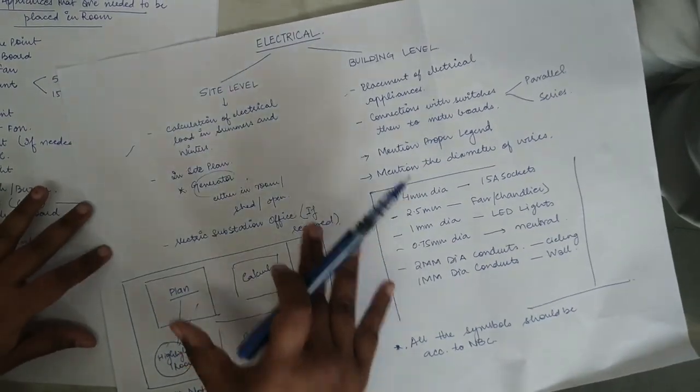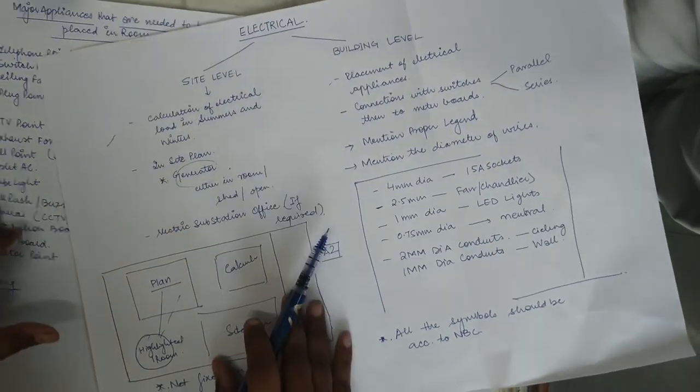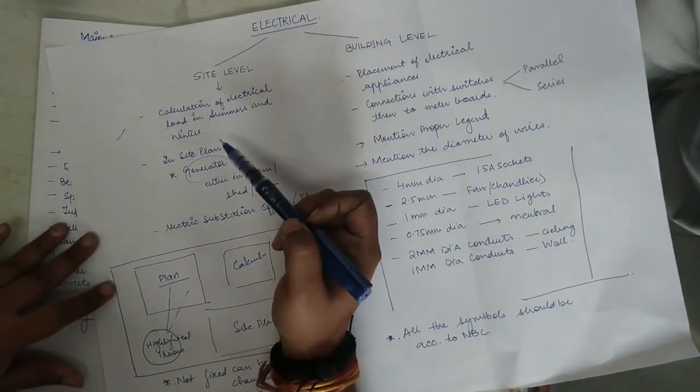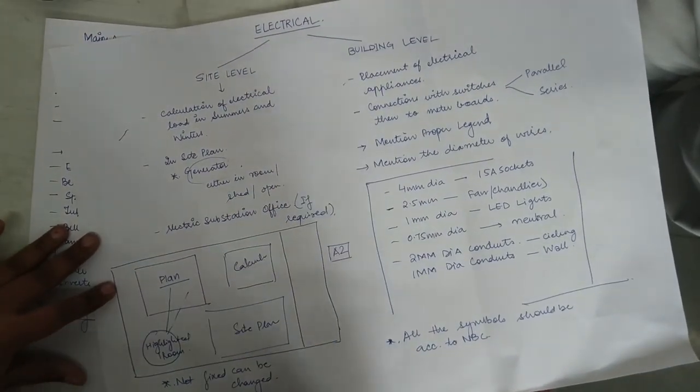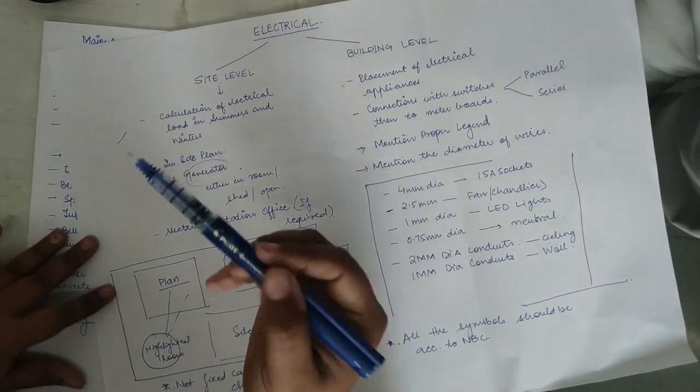Firstly, we will talk about the site level. At site level, two things are needed to be done. First of all, we need to have the calculations of electrical loads in summers or in winters. You can calculate any one.